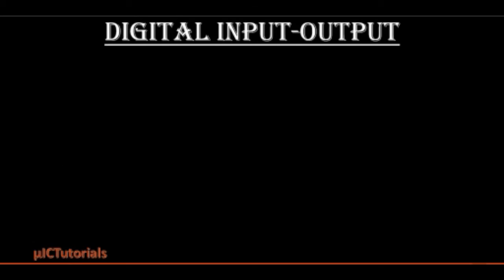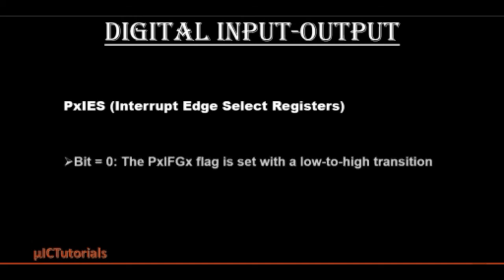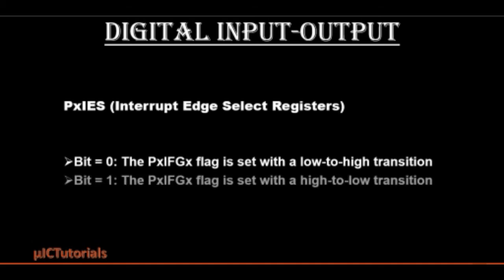The PXIES register selects the interrupt edge for the corresponding input-output pin. The interrupt flag is set when the selected input signal edge occurs at the pin. If the bit is high, the respective PXIFG flag is set on a low-to-high transition. If the bit is low, the respective PXIFG flag is set on a high-to-low transition.